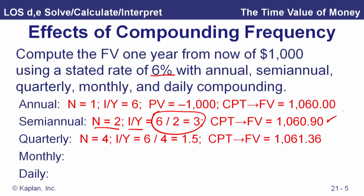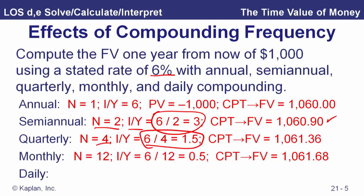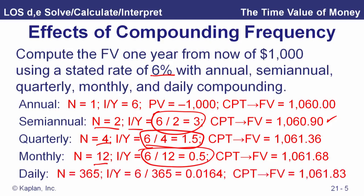For monthly compounding we have 12 periods with an effective monthly rate of 0.5%. With daily compounding, assuming a 365-day year, N equals 365. Our daily effective interest rate is 0.0164% (6 divided by 365), and we get a future value of $1,061.83.